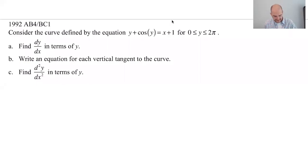All right, in this video we're going to do 1992 AB4 BC1. So these are from the AP Calculus exam, free response questions. And it's a question that's going to be about implicit differentiation.